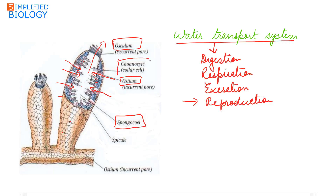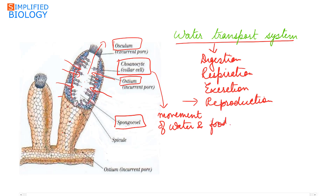Choanocytes, or collar cells, line the cavity of the sponges and help in the movement of water and food. The body of a sponge is supported by a skeleton made up of spicules, also known as spongine fibers, which provide support to the sponges.